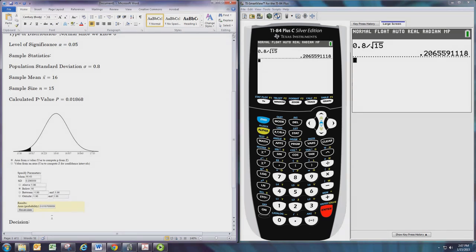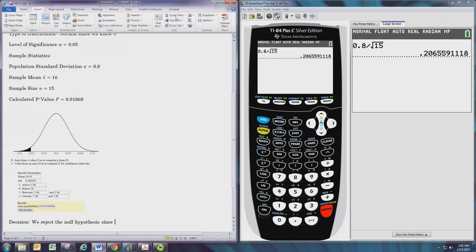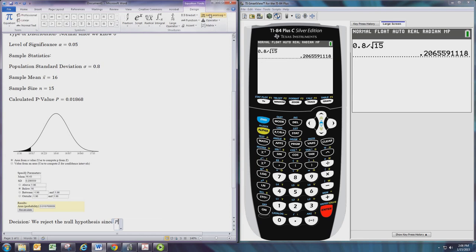In this case the p-value is less than the level of significance. So we reject the null hypothesis since p is less than alpha.